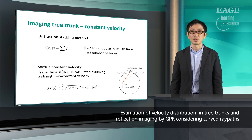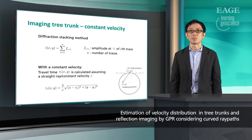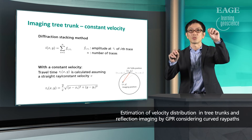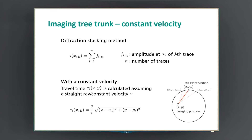Now let's consider reflection imaging with the estimated velocity. In the case of constant velocity, imaging a tree trunk can simply be done by using diffraction stacking method. We just need to calculate the distance between data sampling position and imaging position with a straight line, and calculate travel times with a constant velocity, and sum amplitude at a travel time for all sampling positions to get the intensity at an imaging position.